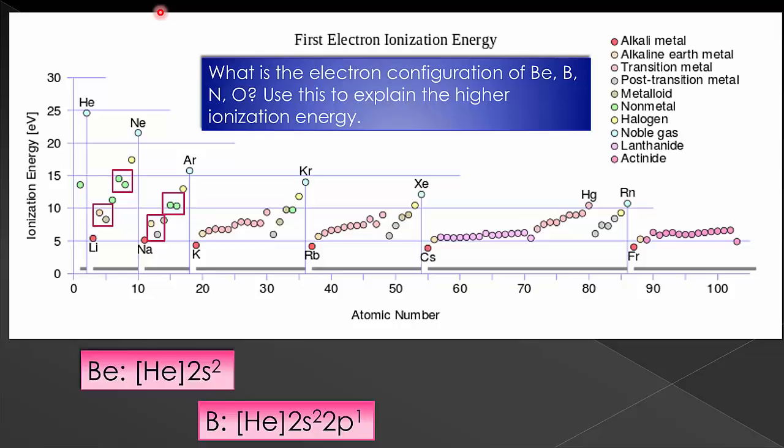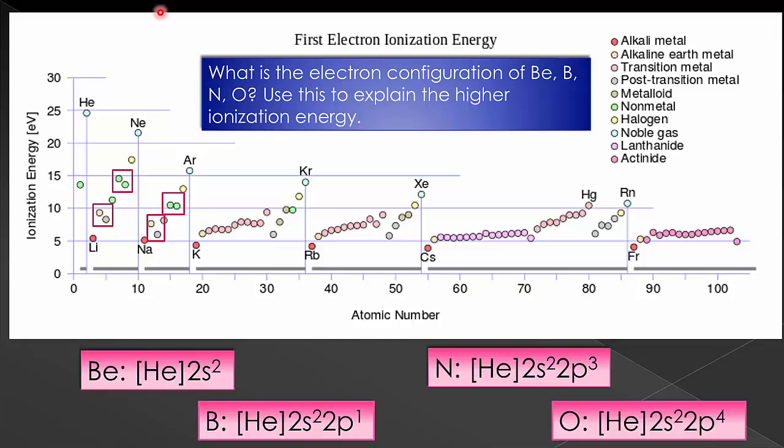Let's do the same thing for nitrogen and oxygen. For nitrogen, we have 2s²2p³, and for oxygen, 2s²2p⁴.